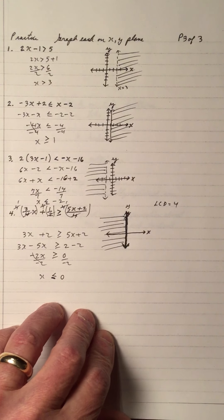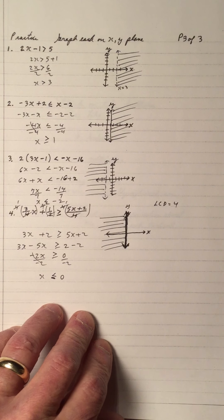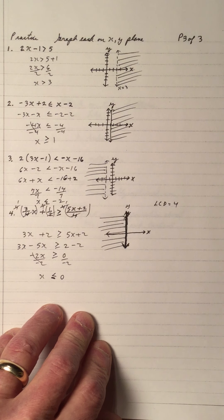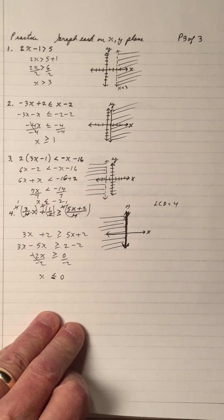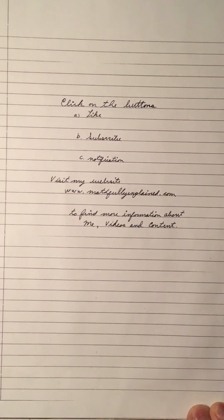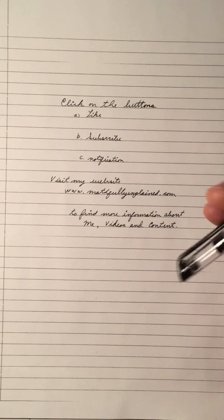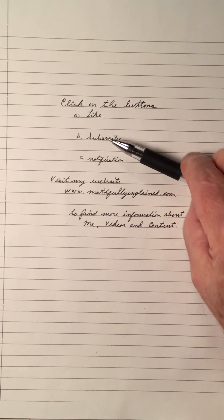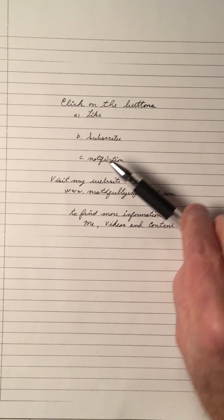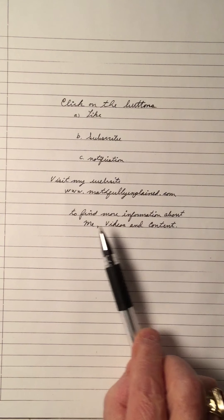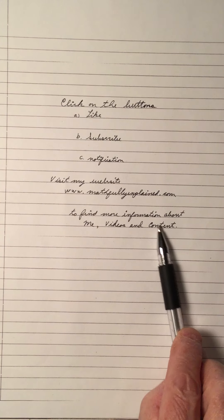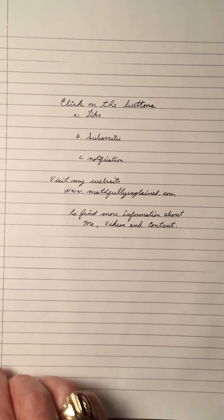x equals a number is a vertical line; y equals a number is a horizontal line. Vertical lines have all x's the same — so when x is 4, all x coordinates will be 4, making a vertical line with an undefined slope. If you like my video, click the like button, subscribe button, and click the notification bell — more videos are coming. Visit my website at www.mathfullyexplained.com for more information. Thank you for viewing my video.